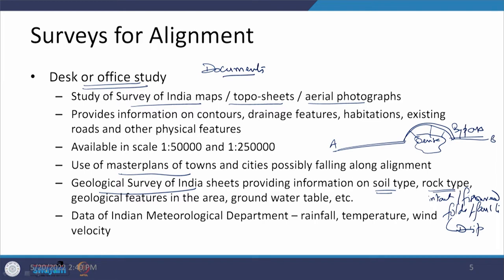Within the geological data, another important thing is related to water — the hydrological data required, such as what level the ground water table is at. For surface features, we need to see how things look and what type of drainage patterns are there. So the drainage characteristics are another important aspect, and all of these are captured from the available information.